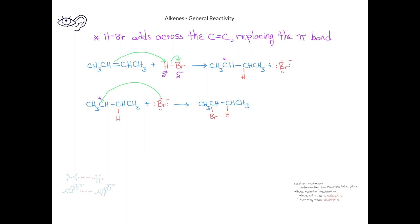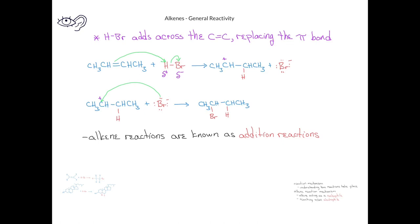In the second step of this mechanism, the bromide ion will act as a nucleophile and form a bond with one of its lone pairs of electrons to the second sp2 hybrid carbon atom. In this way, we've seen that the hydrogen and the bromine have been added across the carbon-carbon double bond, replacing the pi bond. Because the HBr has been added across the double bond, we call these general types of alkene reactions addition reactions. Another important feature to recognize in this mechanism is the presence of a positive charge on one of the carbons that did not get the initial hydrogen — this carbon atom with a positive charge is known as a carbocation. In alkene addition reactions, it will be common to have a carbocation formed in the first step of the mechanism.